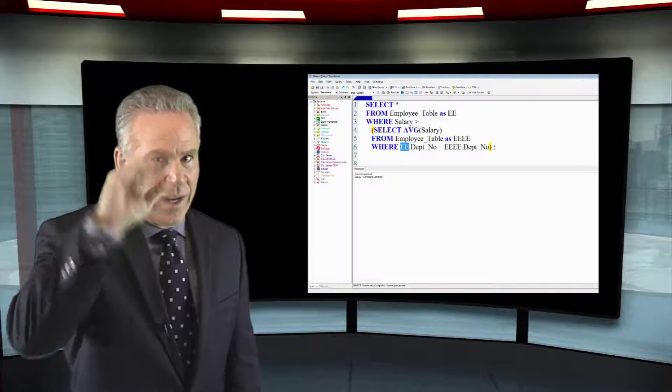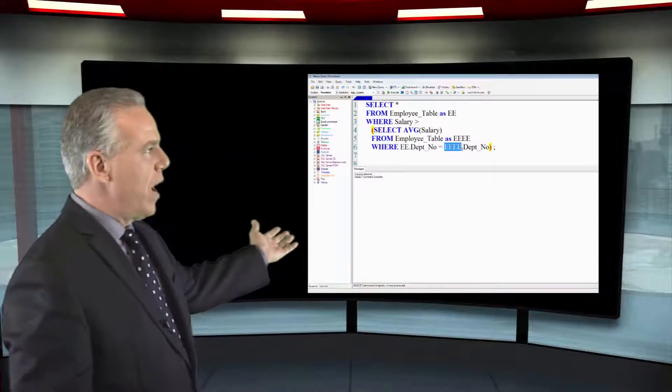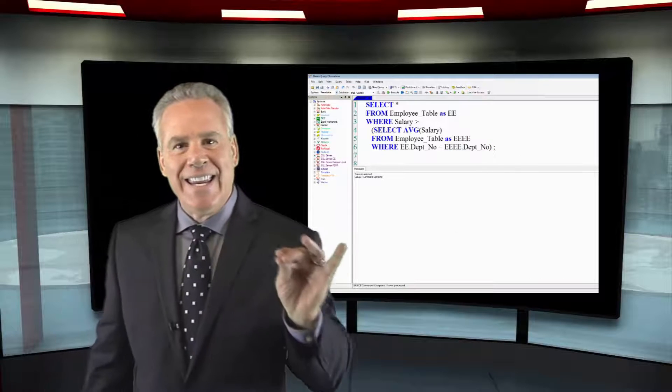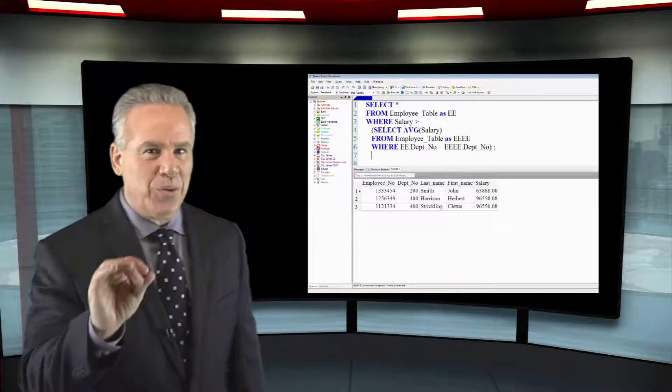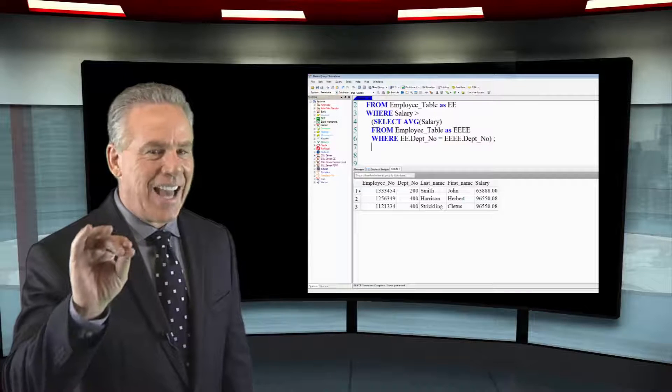I've got the top query, now I've got the bottom query, and I put the last where in: where EE.depno is equal to EEE.depno.